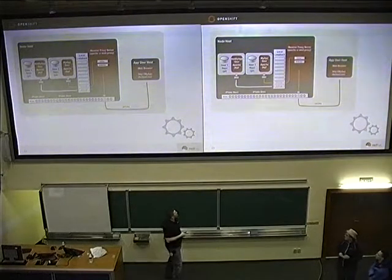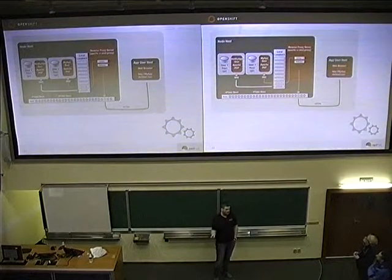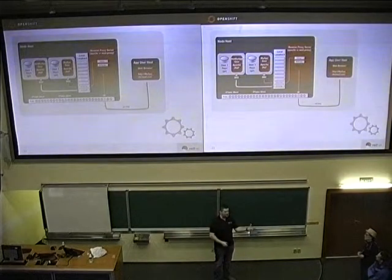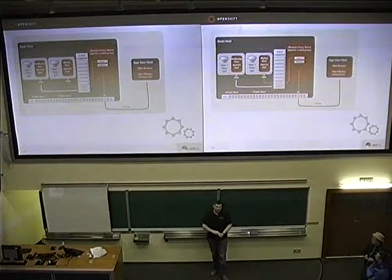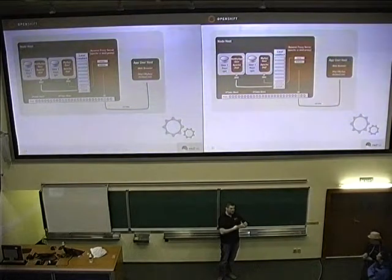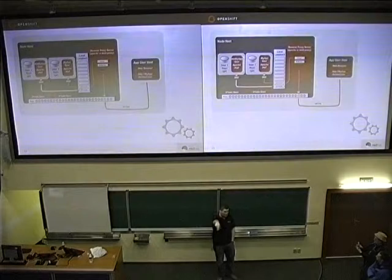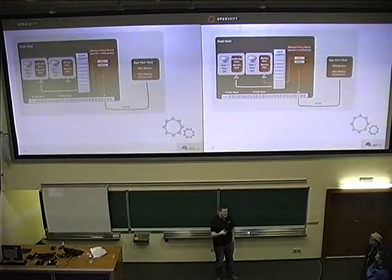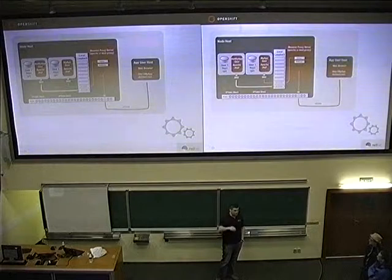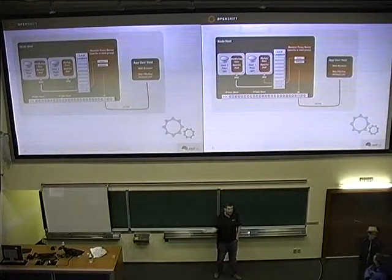We also have scalable applications. In a non-scalable app, it's just one gear on one node and requests come straight to it. For a scalable one, we put HAProxy in front and load balance requests to the gears serving that application. We monitor response times and auto-scale the number of workers up and down based on the load of your application.